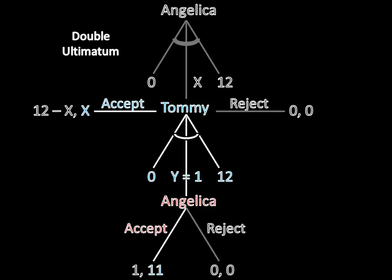Now we compare Tommy's payoffs for accepting Angelica's offer and proposing a counteroffer. This is where it gets kind of tricky. Tommy will reject any X less than 11. He's indifferent between accepting and proposing an offer when X equals 11. And he will definitely accept when X equals 12.